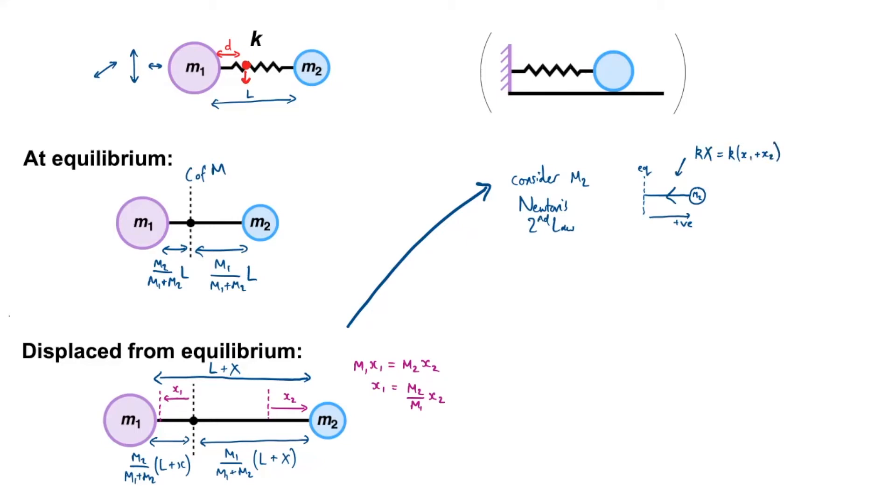Okay, the mass will be accelerating in this direction, that's the acceleration, this is equal to the second derivative of the displacement x2 with respect to time. So now using Newton's second law, well the acceleration and the force are in opposite directions, so I'm going to say minus k of x1 plus x2 is equal to the mass m2 times by the acceleration of m2.